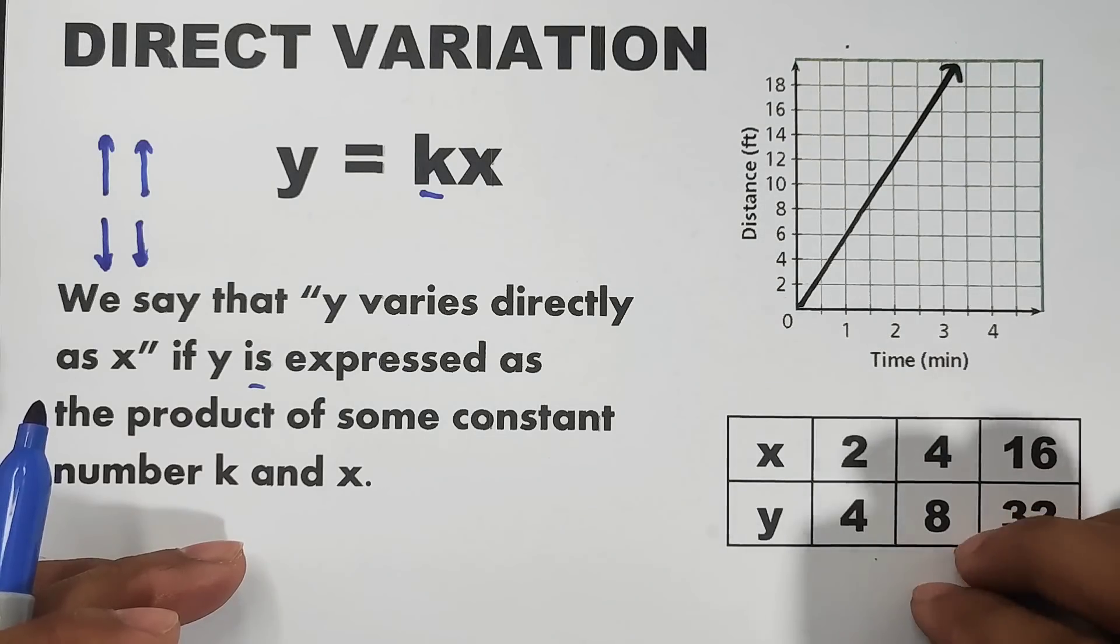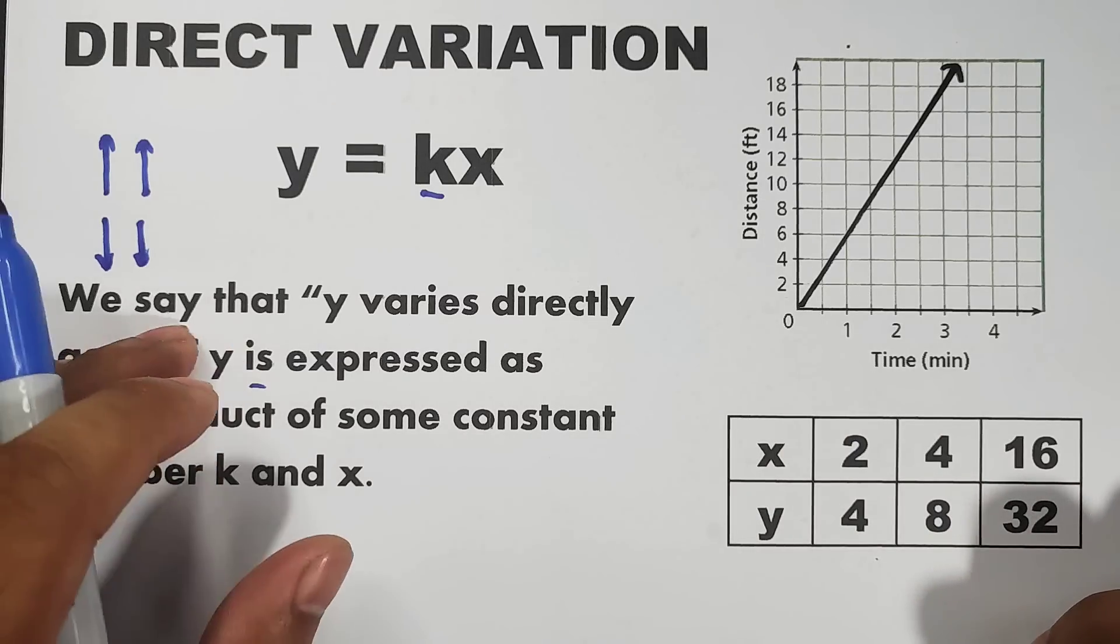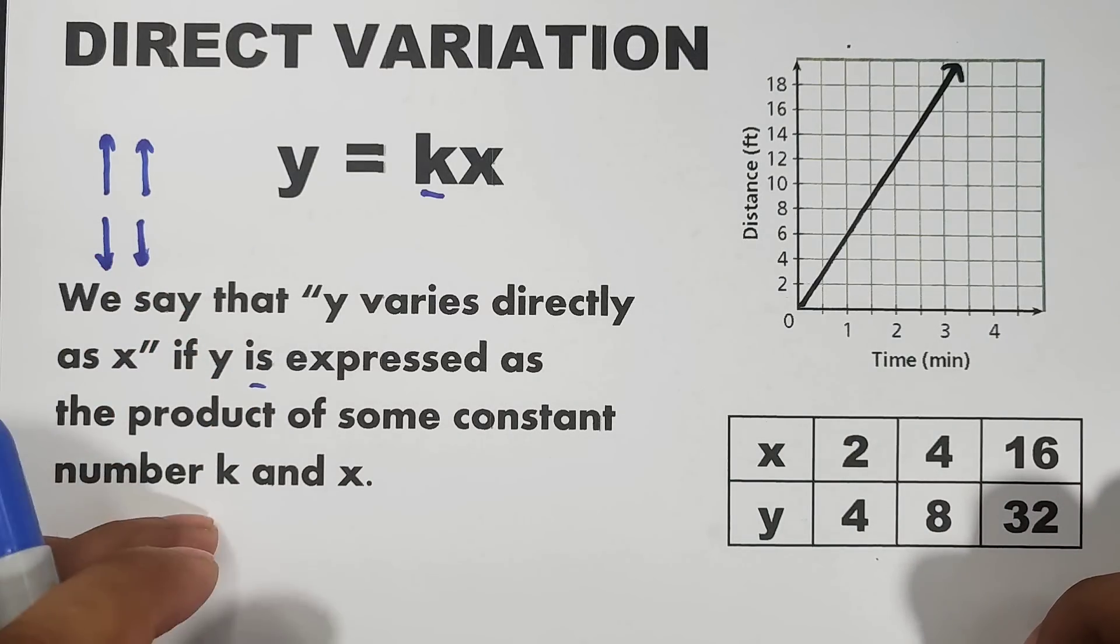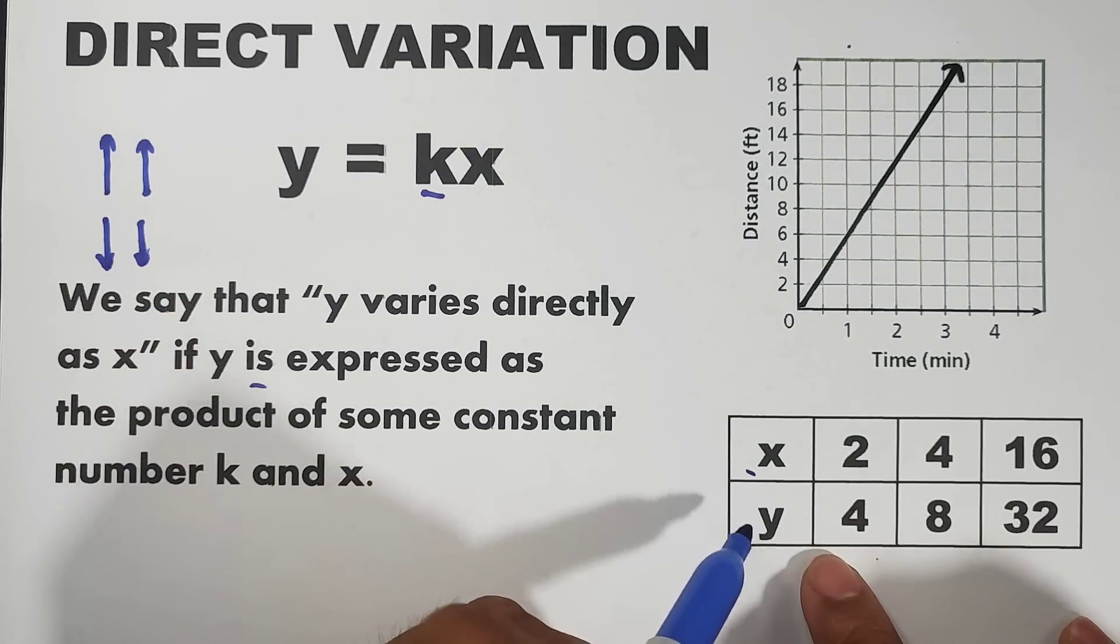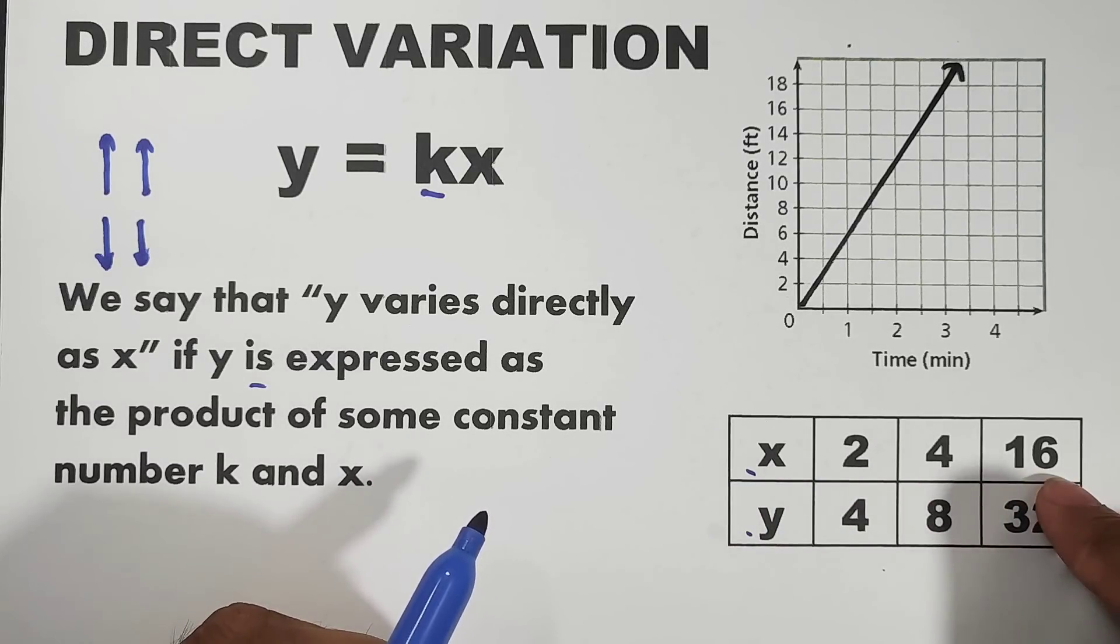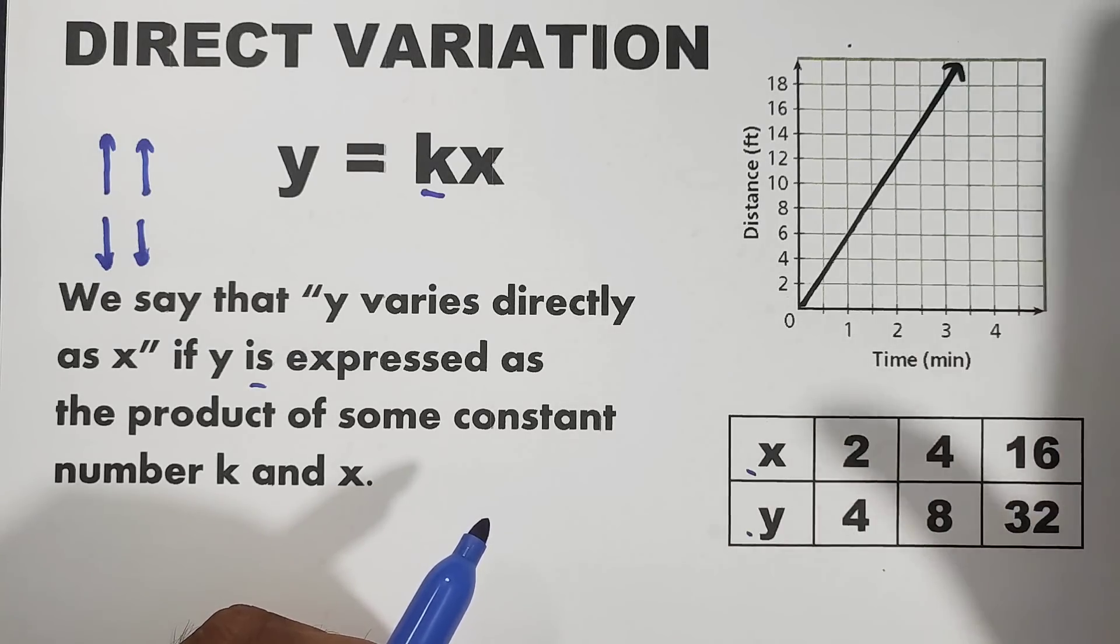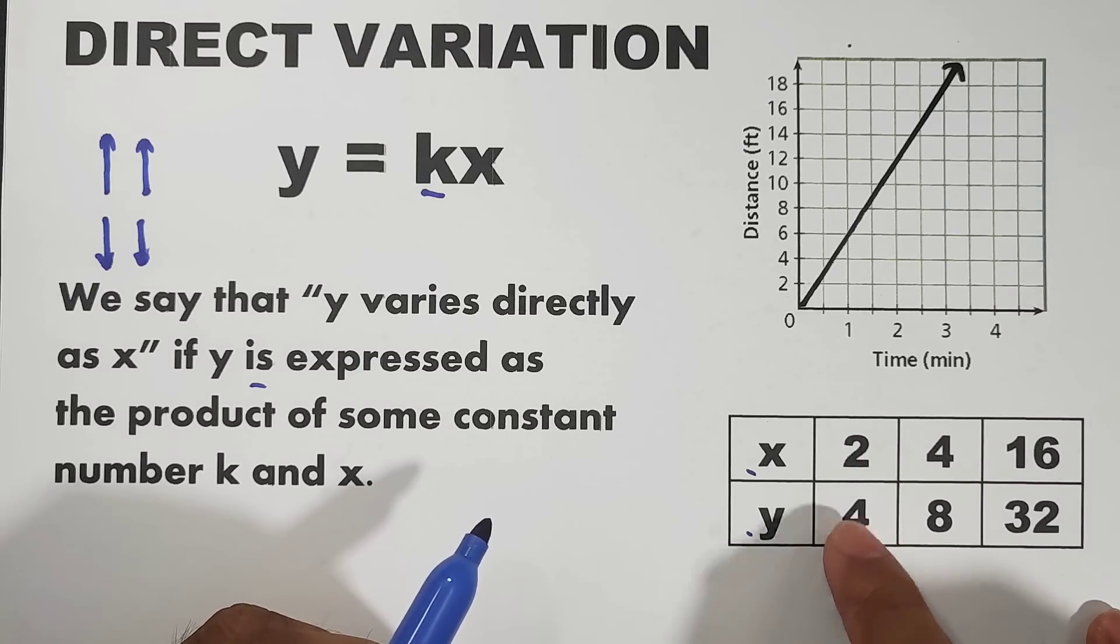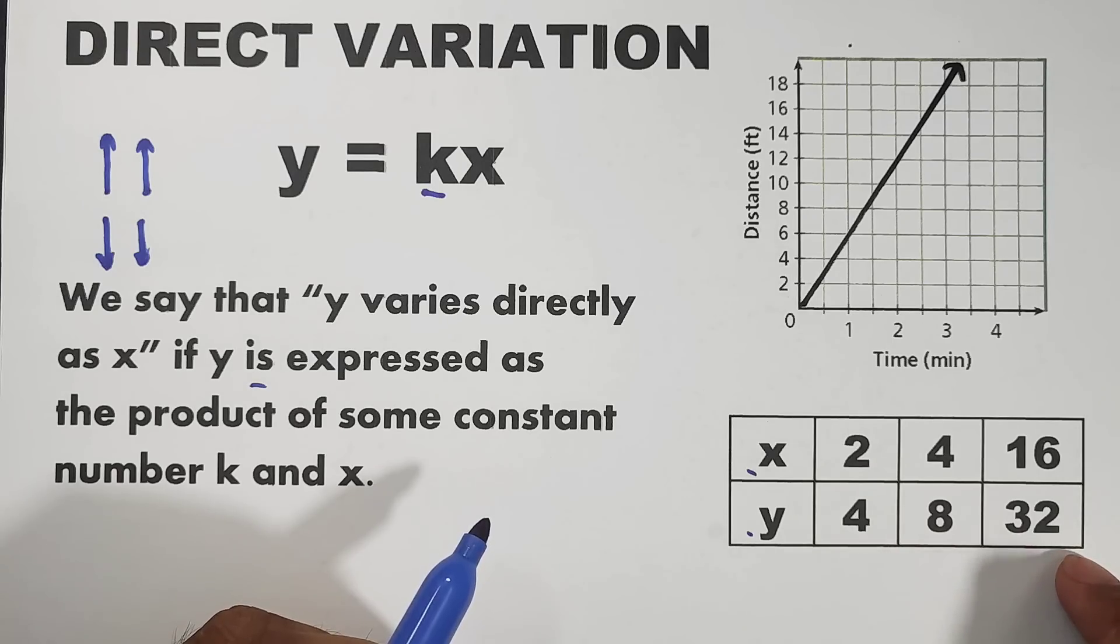So, right now, we have here two different examples of direct variation. Look at this given table of values. We have here the variable x and the variable y, where the values of x are 2, 4, and 16. And as you can see, the behavior of these numbers or these quantities is going up or increasing. While here, in the variable y, we have 4, 8, and 32. As the value of x increases, ang tendency, nag-i-increase din yung value ng variable y. That's why this table of values represents direct variation.